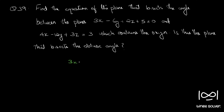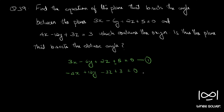We proceed just like the previous questions. First, we make sure that the equations of the plane have positive constants. The constant must be positive — otherwise we multiply throughout by minus 1. For the second equation, bringing 3 to the other side gives minus 3, so we multiply throughout by minus 1 to get: minus 4x plus 12y minus 3z plus 3 equal to 0.